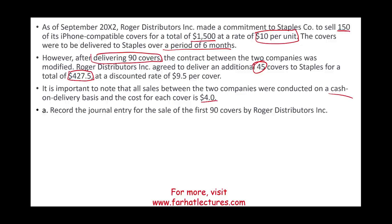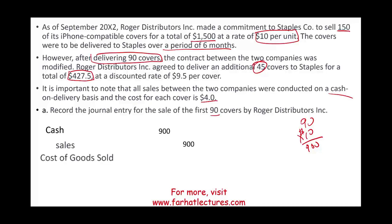Record the journal entry for the sale of the first 90 covers. We sold 90 covers at $10 per unit, so we're going to receive $900. We debit cash $900 and credit sales $900. The cost for each unit is $4, so $4 times 90 units is $360 — debit cost of goods sold, credit inventory. Pretty straightforward, nothing unusual about it.